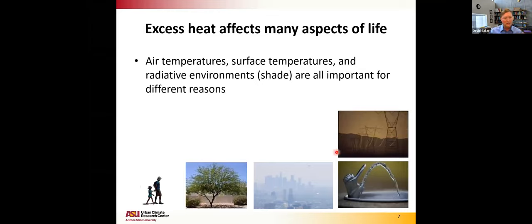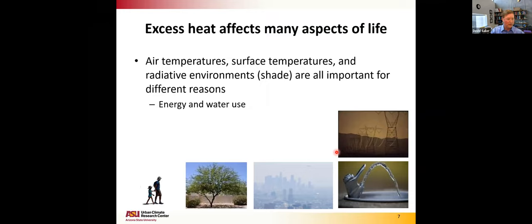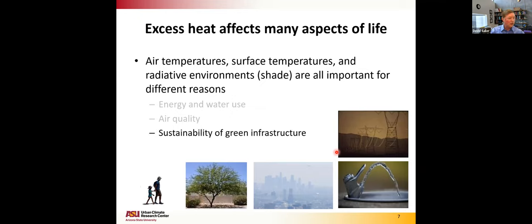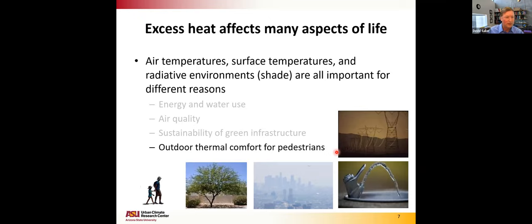When thinking about excess heat, I'm thinking not just about air temperatures but also surface temperatures and the radiative environments that pedestrians are exposed to — shade, for example. Energy and water use are impacted by the thermal environment, as is air quality, sustainability of green infrastructure, and outdoor thermal comfort for pedestrians. These are all things we care about in the urban setting, and they represent multiple co-benefits of cooling a city that need to be taken as a complete package.